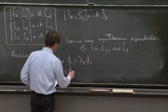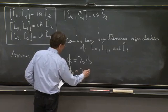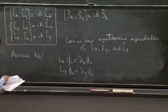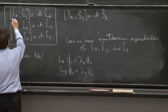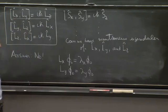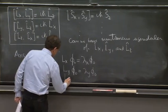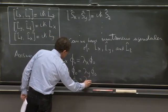Lx on that eigenstate phi naught is some number lambda x phi naught. And Ly on phi naught is equal to lambda y phi naught. Well, the difficulty with this is essentially, well, we could even say that Lz on phi naught is equal to lambda z phi naught.